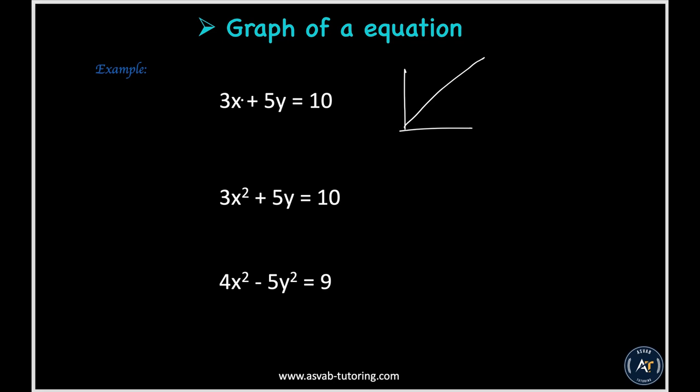So if the exponent is one, exactly one, that will give you a straight line. Otherwise, it won't give you that. Let me just open an online calculator and that will show you a little bit.